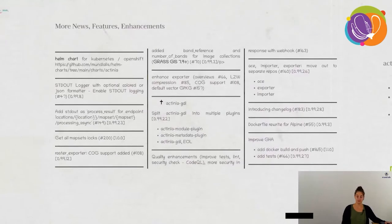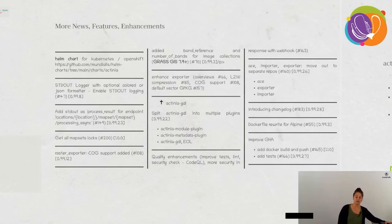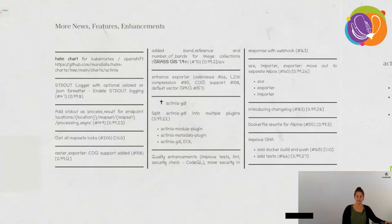Beyond those highlights, there are many smaller enhancements, documentation improvements, and linting improvements. One worth highlighting is the Helm chart we developed — available on GitHub — which can be used for Kubernetes and likely OpenShift, though we haven't tested OpenShift yet. On a sad note, Actinia GDI has reached end of life on GitHub; we still use it in some projects with project-specific adjustments, but the GitHub version has been split into the Actinia module plugin and the Actinia metadata plugin.